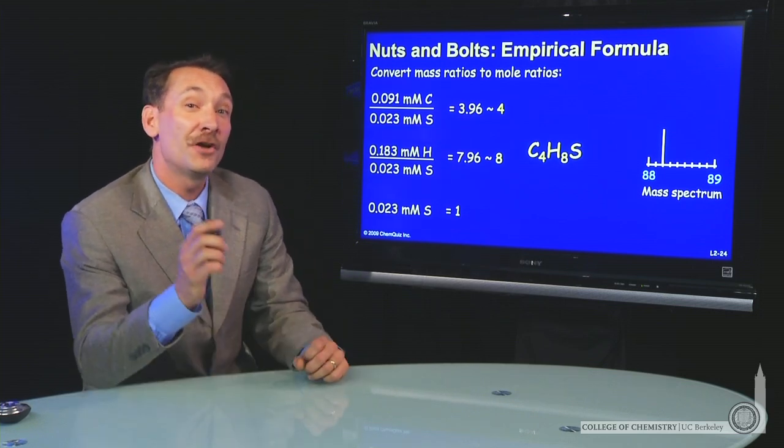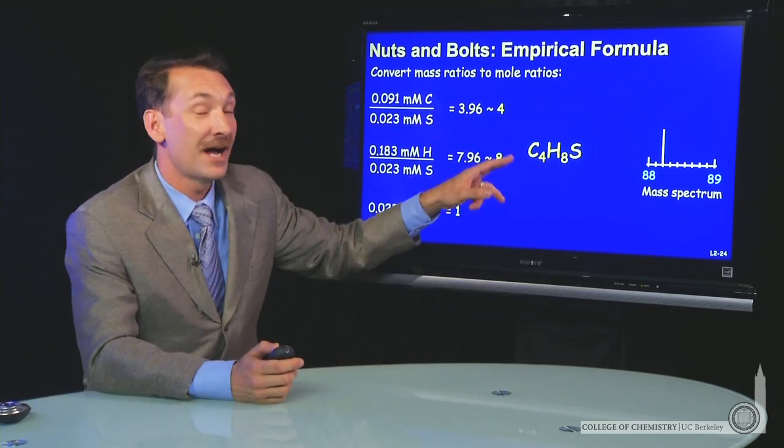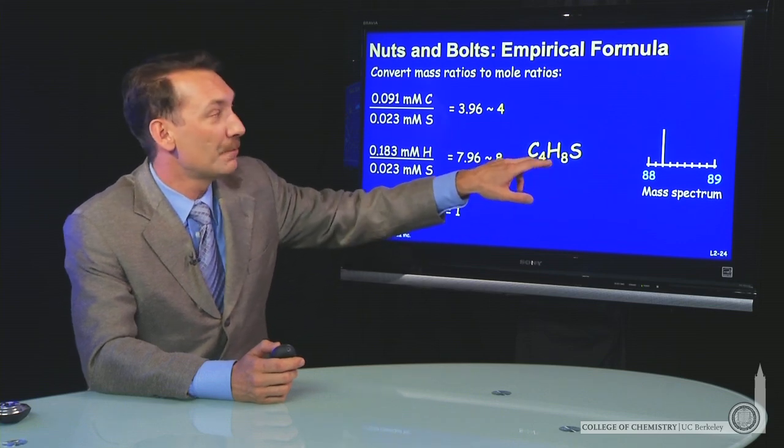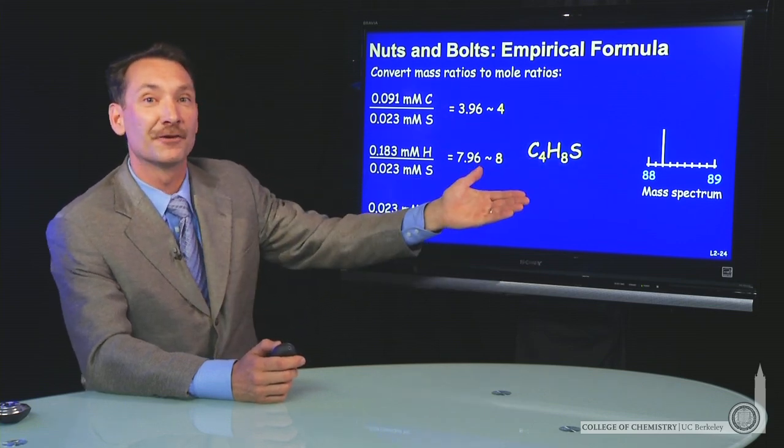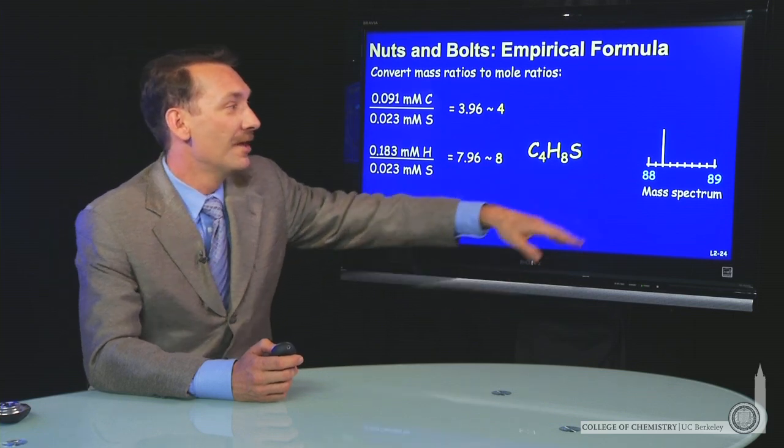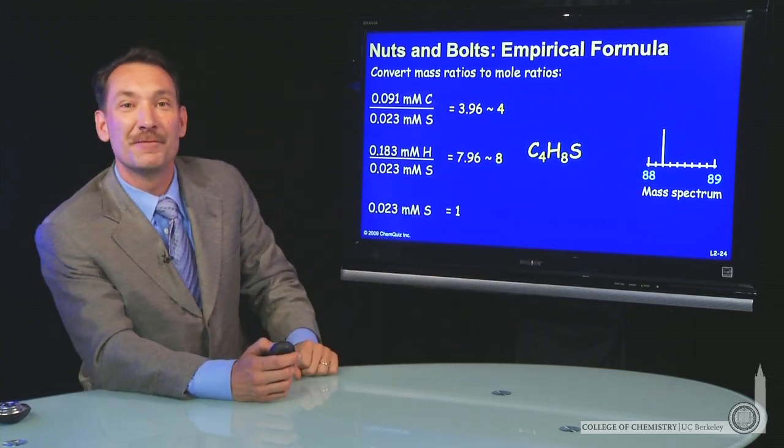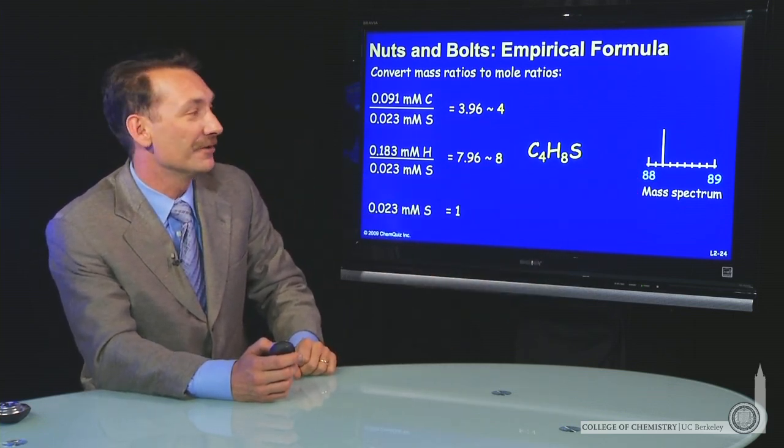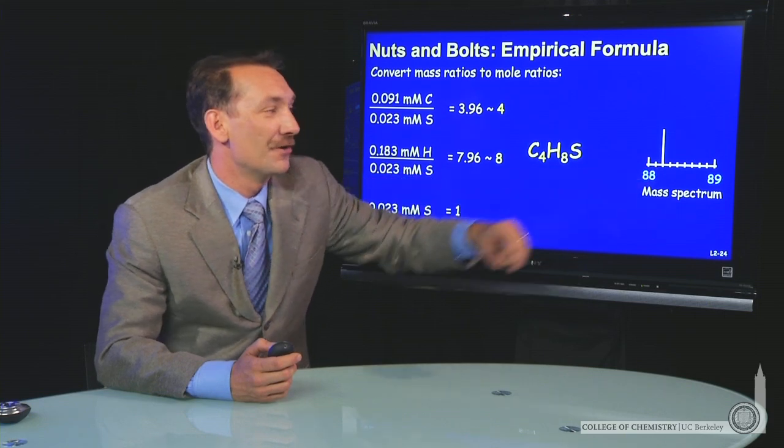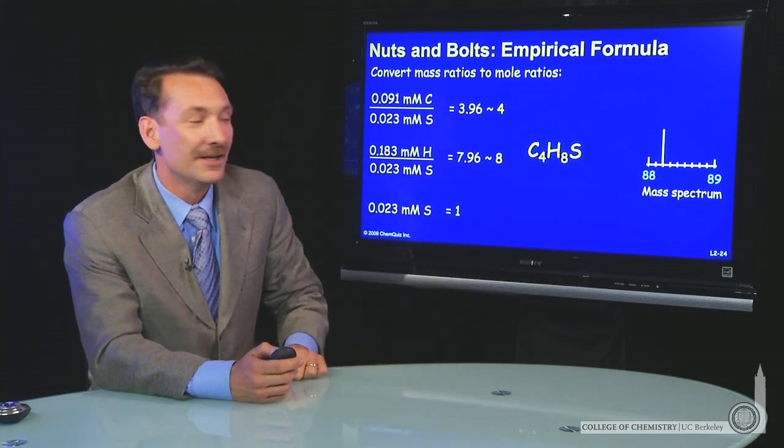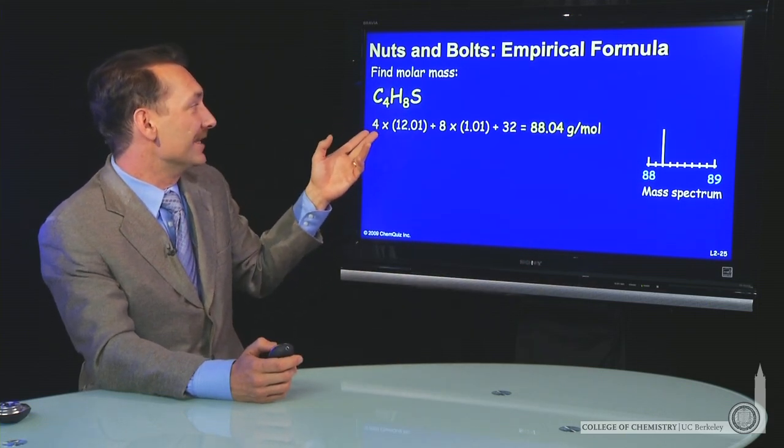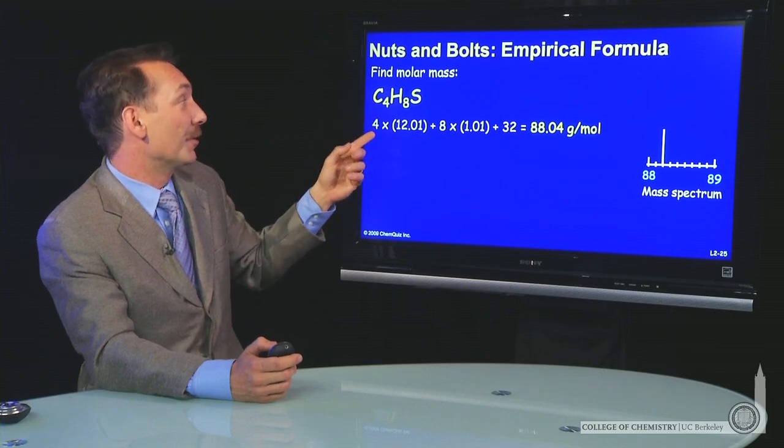Now if you also knew the molar mass of the compound, which would have to be some multiple of this, you could come up with a molecular formula. So the molar mass, if you did the mass spectrum of this compound, turned out to be somewhere around 88. You could say the molar mass is, well, this empirical formula,